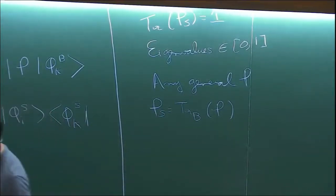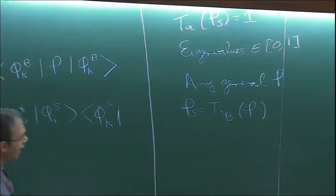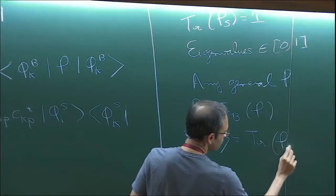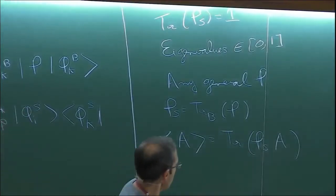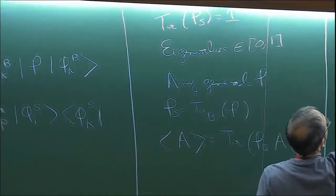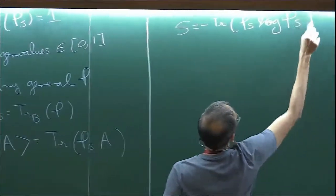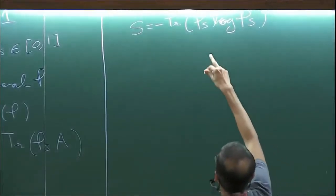Once the reduced density matrix has been obtained, because it's like any other density matrix, you can use it for various calculations. For instance, if you want to calculate the expectation value of some operator belonging to the subsystem when the full system has a given density matrix, you calculate the reduced density matrix and the expectation value of operator A is trace(rho_S * A), where A is an operator defined on the Hilbert space of S. You can also define the von Neumann entropy corresponding to the reduced density matrix, which is minus trace of rho_S log rho_S.